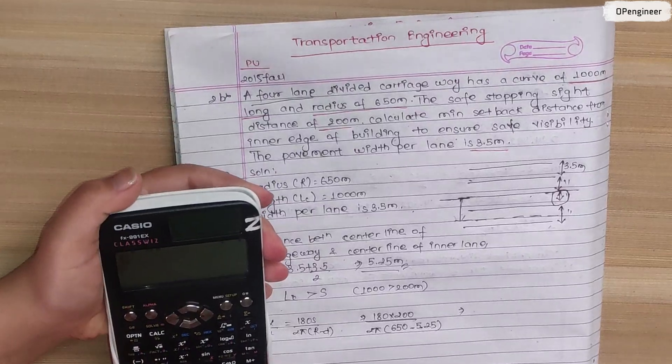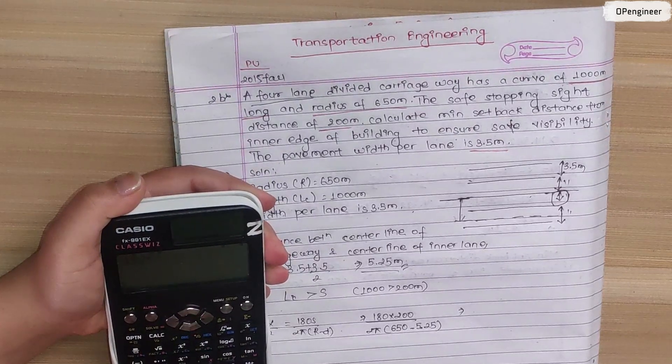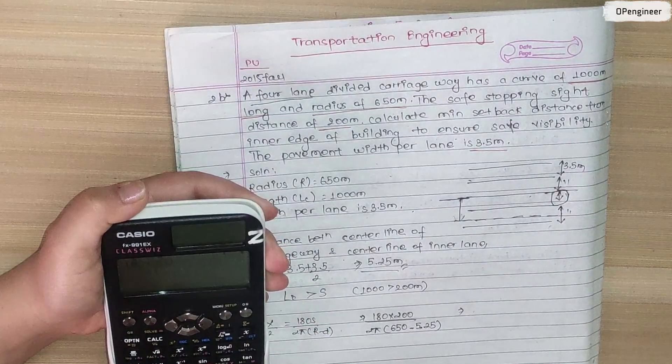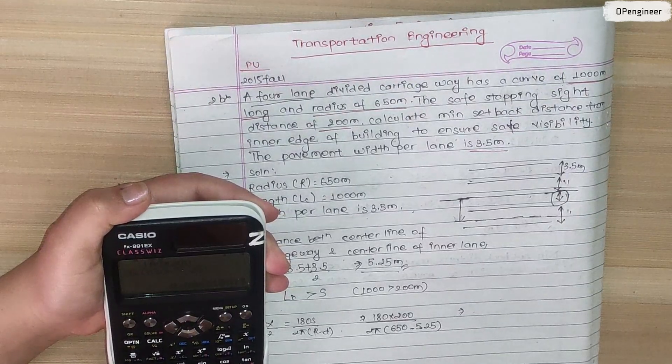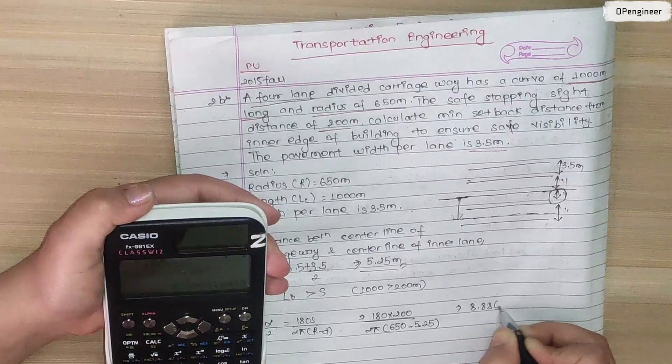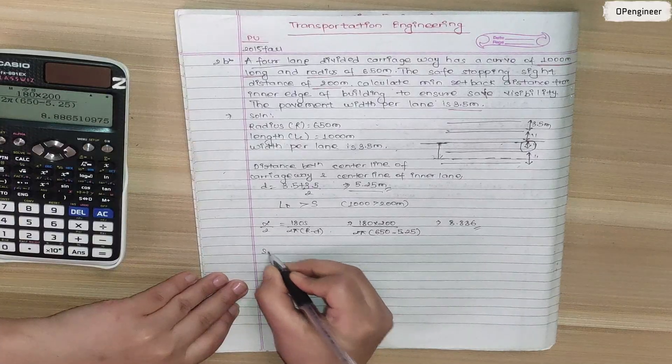Calculate: 180 into 200 divided by 2 pi 650 minus 5.25, which equals 8.886.